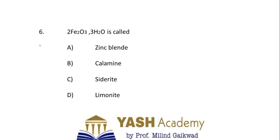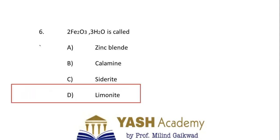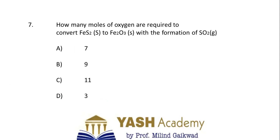Sixth question: the chemical formula Fe₂O₃·3H₂O is given. Generally you are asked to identify the correct formula, but here the formula is given and you are asked what it is called — Zinc blende, Calamine, Siderite, or Limonite. The correct answer is Limonite.